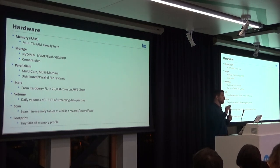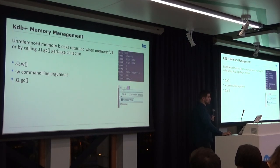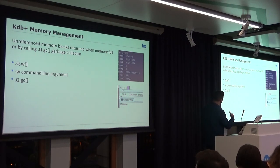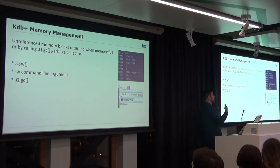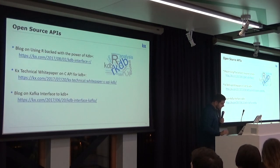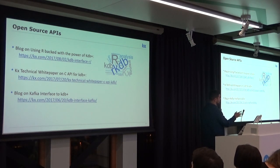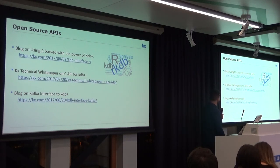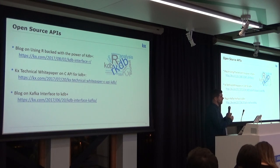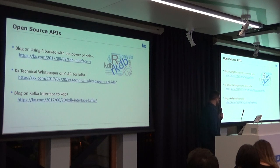KDB has a bit of a steep learning curve, but it gets easier once you understand the basics. For memory management, there are commands to allocate memory, check available memory, and run garbage collection. There are also resources including a blog on the R statistical language, a technical white paper on the C API, and a blog on the Kafka interface — all downloadable from the website.